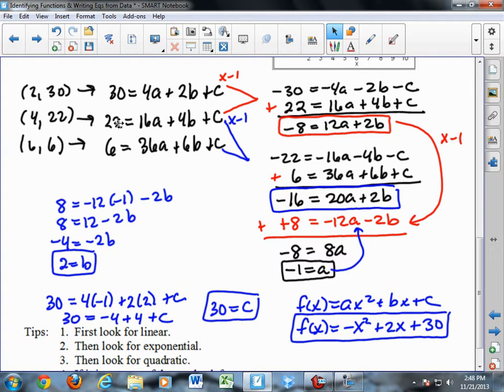So those are down here. And notice when I add them together, the c's drop out again, getting negative 16 equals 20a plus 2b.